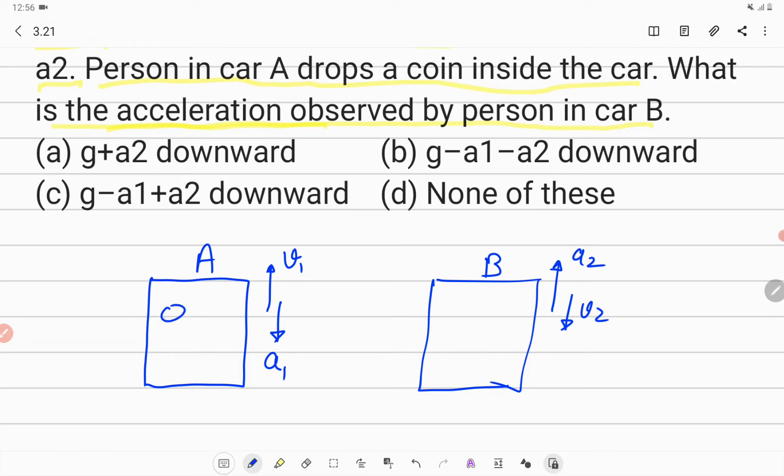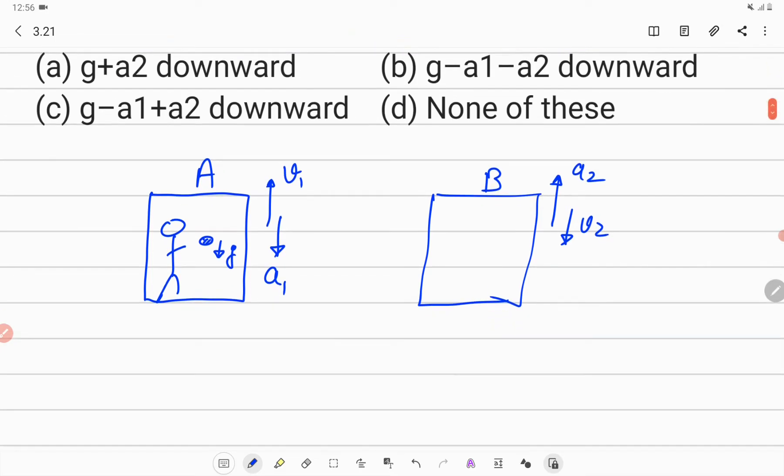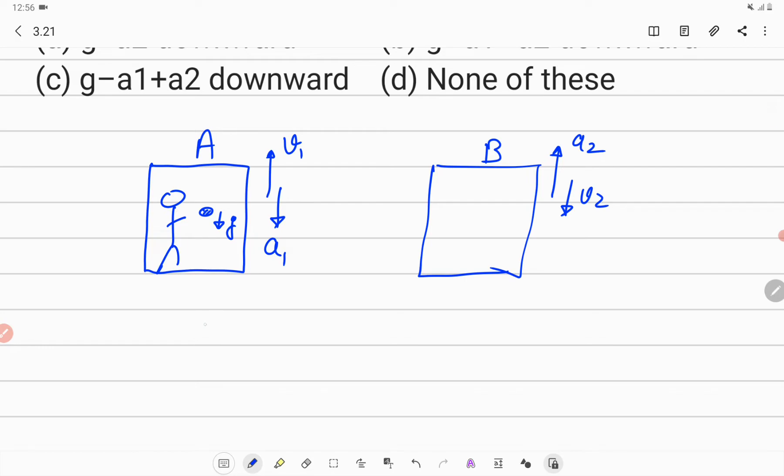Now there is a person in car A which is dropping a coin. So the coin when it is dropped should move with an acceleration G in the downward direction. So its acceleration with respect to car B is asked to us.